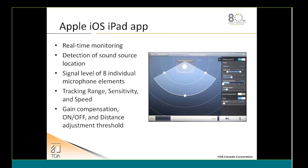The app provides real-time monitoring, detection of sound source location, and displays the signal level of all eight individual microphone elements. Tracking range, sensitivity, and tracking speed are all configurable. The sliders visible on the right-hand side of the app window are fully customizable — you can set distance limits, angle limits, and speed configuration. For example, if a talker is moving around constantly, you can increase the tracking speed. You can also narrow the pickup field within the three-meter range.